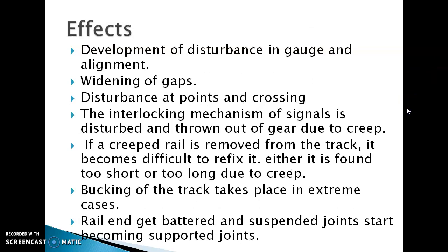The effects of creep include: development of disturbance in the gauge and alignment, change in sleeper positions, widening of gaps, disturbance at points and crossings, disruption of the interlocking mechanisms of signals. If a creep rail is removed from the track, it becomes difficult to refix it. Buckling of the track takes place in extreme cases, and rail ends get battered while suspended joints start becoming supported joints.